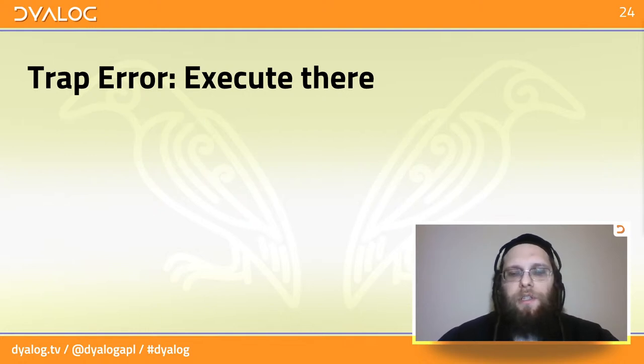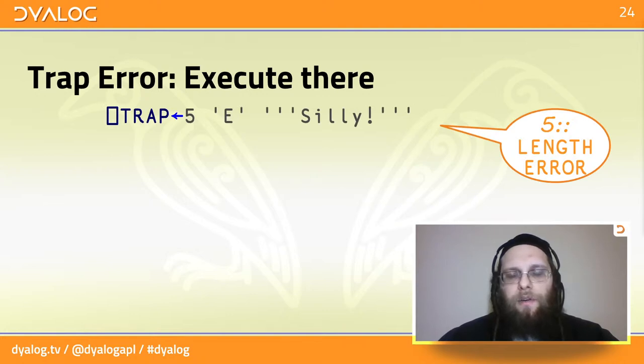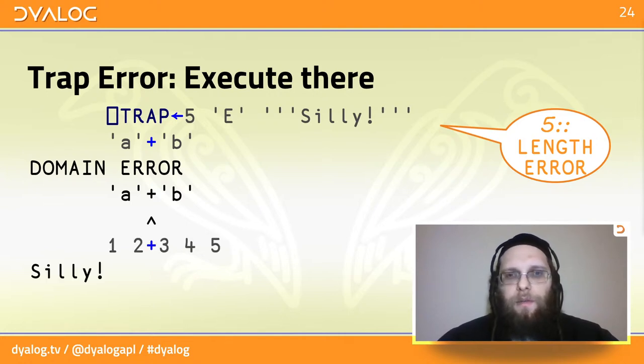You can also use this straight in the session to modify the behavior when an error happens. Here we're setting a handler for a length error. We're going to execute the statement, which is just quote silly quote, but we have to double all the quotes because they appear inside a character vector. Now, if you cause a domain error to happen, normal action is taken. But if we cause a length error, then we get the message back. Notice here that the word silly is not the result of plus. We didn't modify how plus behaves when it hits an error. We're simply stopping that and printing this message to the session. So you cannot capture this as a result.